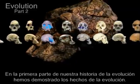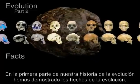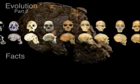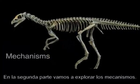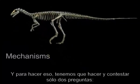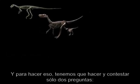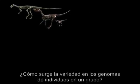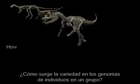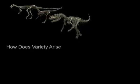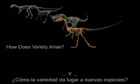In part one of our story of evolution, we demonstrated the facts of evolution. In part two, we will explore the mechanisms. And to do that, we need to ask and answer just two questions: How does variety arise in the genomes of individuals in a group? And how does that variety give rise to new species?